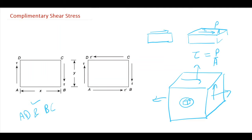You can see that tau is acting on these areas, so the tendency is to rotate the element. It is clear from the figure that the shear stress acting on the element will tend to rotate the block in the clockwise direction. Since there is no other force acting, static equilibrium can only be attained if another counterclockwise couple of the same magnitude is applied.